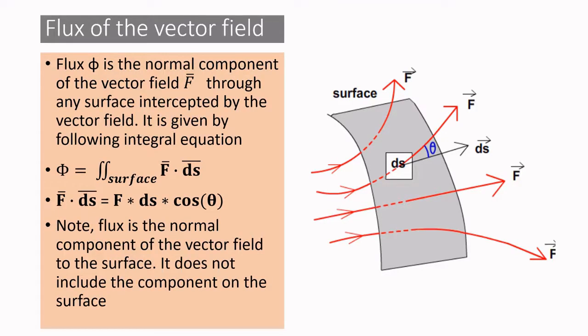The flux phi is defined to be the normal component of the vector field F bar through any surface intercepted by the vector field, and it is given by the following integral equation. Flux phi is equal to the surface integral of F bar.